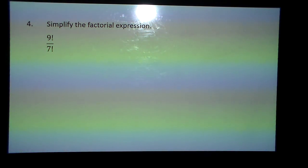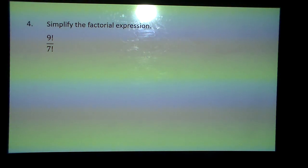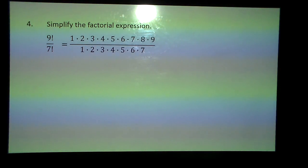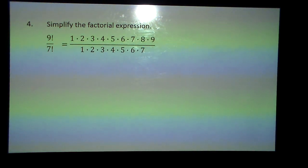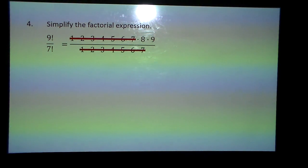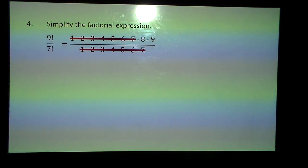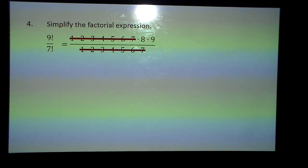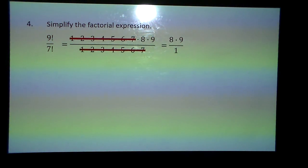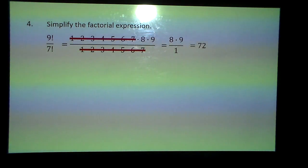Hey, our factorial here. That's 1 times all the numbers through 9 over 1 through 7. Well, obviously the 1 through 7's would cancel out, so I have 8 times 9 over 1, which is 72.